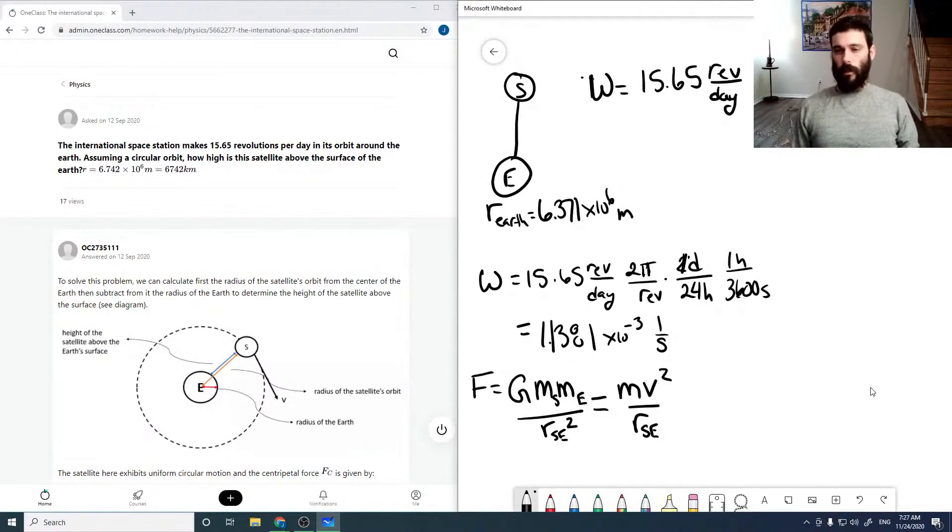But we can also say that omega is V over R. Or we can say that omega squared is V of the satellite squared over R_SE squared. Or our V satellite squared is R squared omega squared, where this R is SE squared.